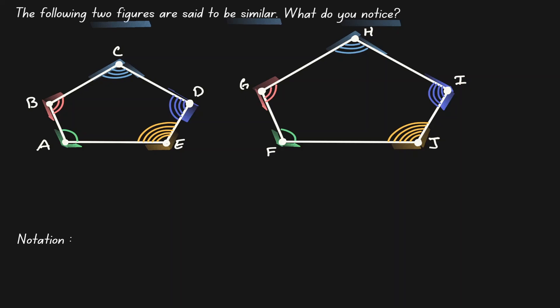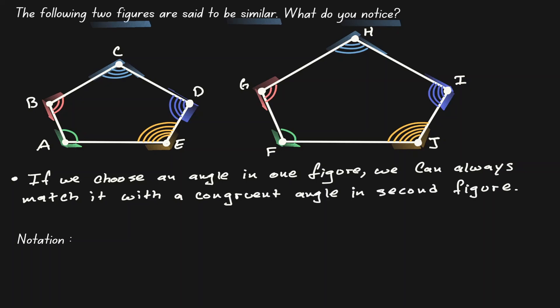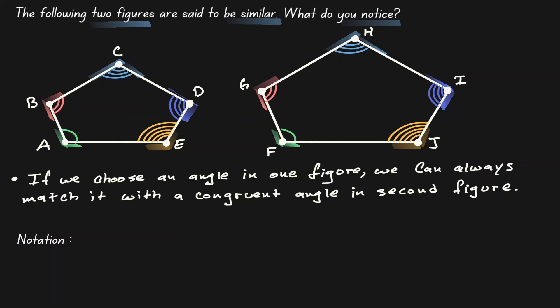If we look at any angle in one figure, we can always match it to a congruent angle of the second figure. Another observation is that both figures seem to be in proportion, meaning that if we choose one side on the left figure — let's choose BA — if we multiply this side by some number, let's call it a scale, we will get the length of the corresponding side on the right-hand figure. And this goes for all the sides.